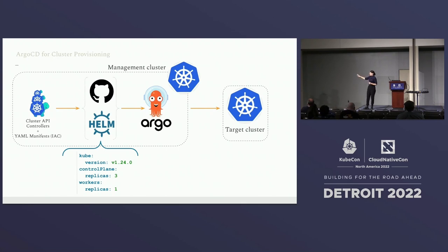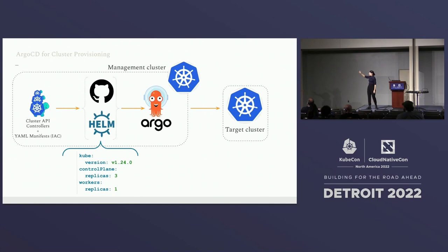I'm just going to use AWS to simulate the compute, but the same process can be used with Tinkerbell. What I have here is a management cluster on my local machine using Kind, ArgoCD installed, Cluster API controllers already up and running, and a target cluster already provisioned. Since it's AWS, I provisioned it beforehand mainly because it takes around five minutes to provision the VPC. We're going to scale our cluster live.